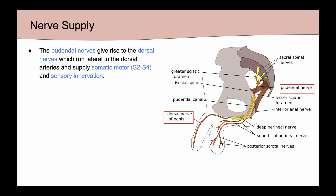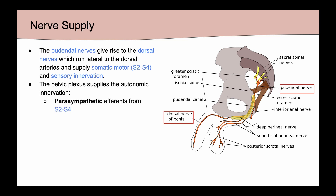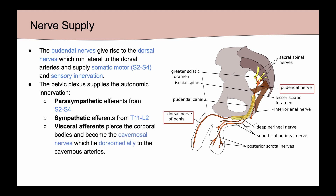Regarding penile innervation, the pudendal nerve gives rise to the dorsal nerves, which run lateral to the dorsal arteries and supply somatic motor and sensory innervation. The pelvic plexus supplies the autonomic innervation, with parasympathetic efferents from S2 to S4 and sympathetic efferents from T11 to L2. Visceral afferents pierce the corporal bodies and become the cavernosal nerves, which lie dorsomedially to the cavernous arteries.